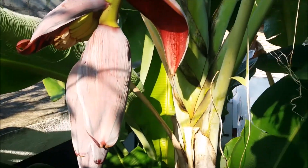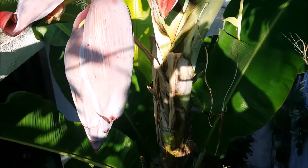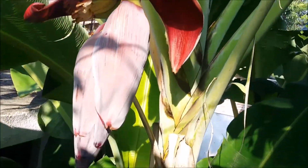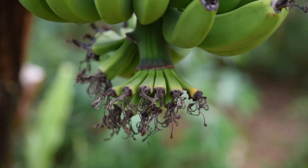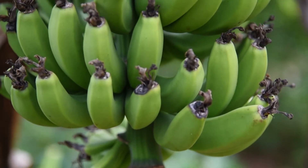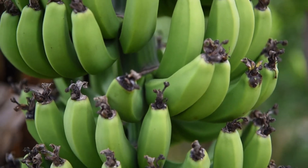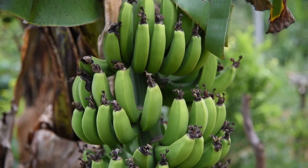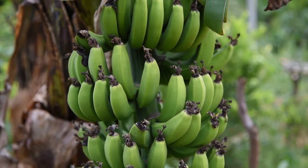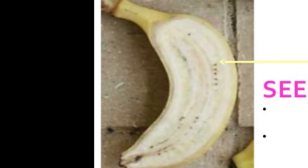The distal end composed of bracts with male flowers is called the pendant. Flowers in between will not produce successful fruit. Finally, the inflorescence converts into a bunch of bananas. Banana fruit contains small flecks of seeds.